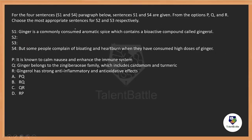Moving on to the next one. The direction says: for the four-sentence paragraph below, sentences one and four are given. From the options P, Q, R, choose the most appropriate sentences for sentence two and three. That means we can pick only two out of three — one needs to be neglected. The two you pick up have to be arranged accordingly, so the arrangement options are PQ, RP, RQ, PR, etc. Now let's try to understand the given passage. The passage is talking about ginger: ginger is a commonly consumed aromatic spice which contains a bioactive compound called gingerol.